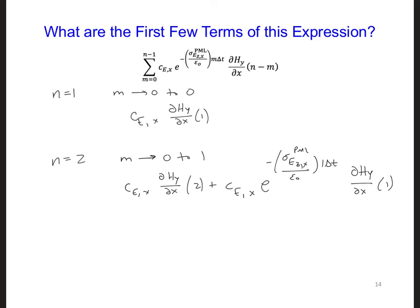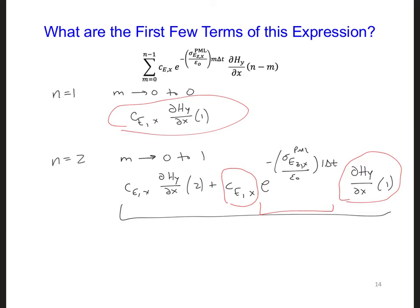This is equal to the result that we got at n minus 1. So notice we have the result at n minus 1, and now we're just multiplying it by this exponential. The result that we got earlier, one time step earlier, we're taking that result, multiplying it by this exponential, and we're tacking on another term. We could keep going, but it turns out that at each time step, we're going to multiply the previous result one time step earlier by the exponential, and we're going to add on the latest c times dH_y/dx term.